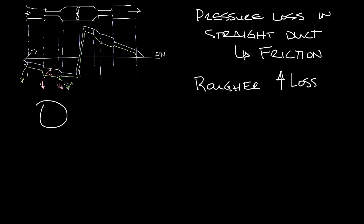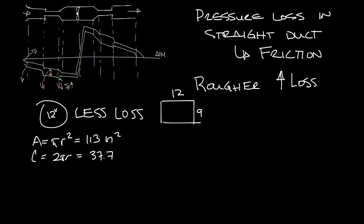As far as the shape of the duct goes, round ductwork will have less pressure loss than rectangular ductwork because there's less surface area. So if you look at this round duct and say it's 12 inches and this is 9 by 12 inch rectangular duct, the area of this 12 inch round duct is pi r squared is about 113 square inches. The circumference of this is 2 pi r and that comes out to be about 37.7 inches.